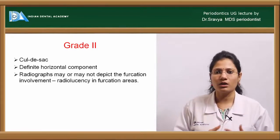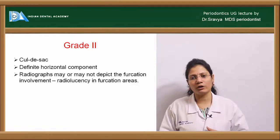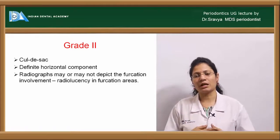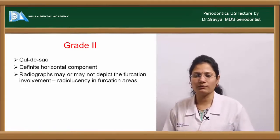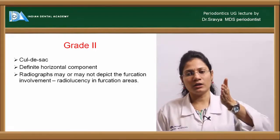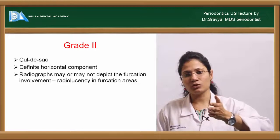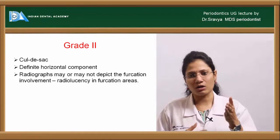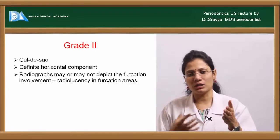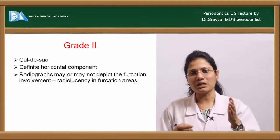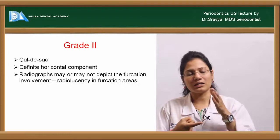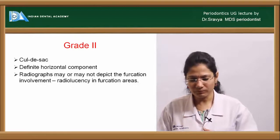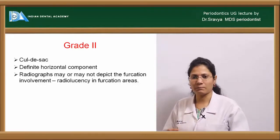For example, in a mandibular first molar with buccal and lingual furcations: in grade two, the lingual interradicular bone may still be intact while the buccal furcation is involved with periodontal disease and bone loss. The probe partially penetrates the buccal side and is blocked by the intact lingual interradicular bone — this is the classic cul-de-sac appearance.